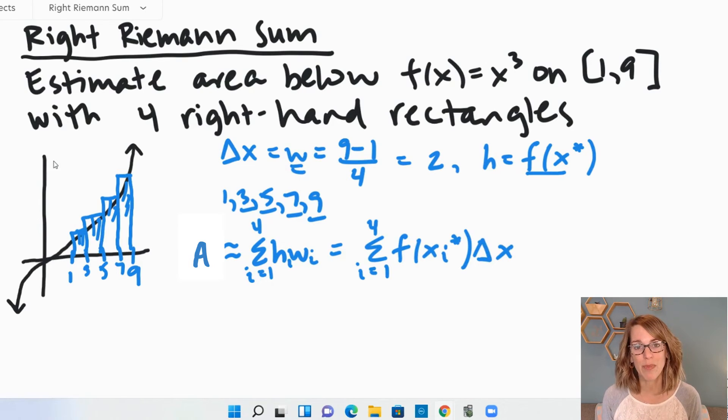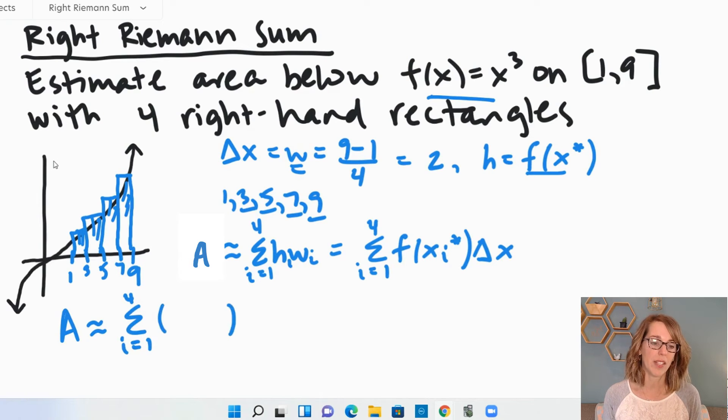Let's continue to put some numbers into this Riemann sum so we can calculate our estimation using those rectangles. So f of x is my function x cubed. So this area is going to be approximated by the sum of those rectangles, i equals 1 to 4. f of x sub i, so that's going to be my x sub i cubed.